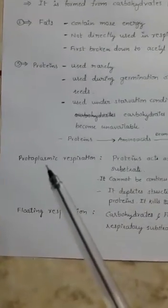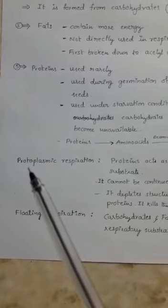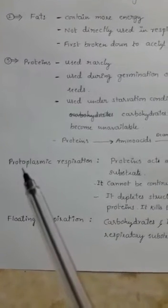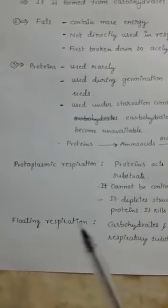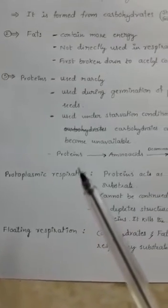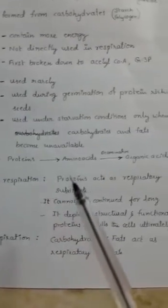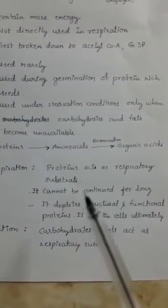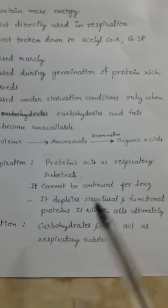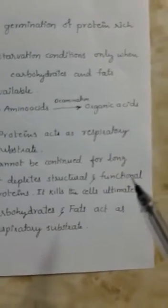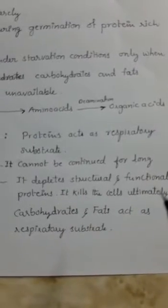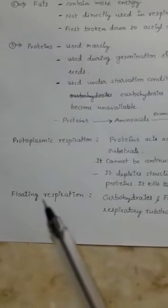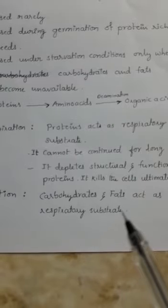Based on the respiratory substrate, respiration is of two types: protoplasmic respiration and floating respiration. In protoplasmic respiration, proteins act as respiratory substrates. It cannot be continued for a long period, as it depletes structural and functional proteins and ultimately kills the cells. In floating respiration, carbohydrates and fats act as the respiratory substrate.